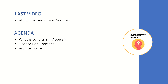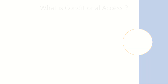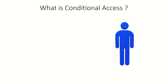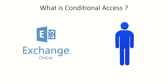The agenda of this video will be: knowing what conditional access is, whether there is any license requirement, and what is the basic architecture behind conditional access — or when a conditional access policy is triggered. To understand all this, let's consider a scenario where a particular user is trying to access an application.